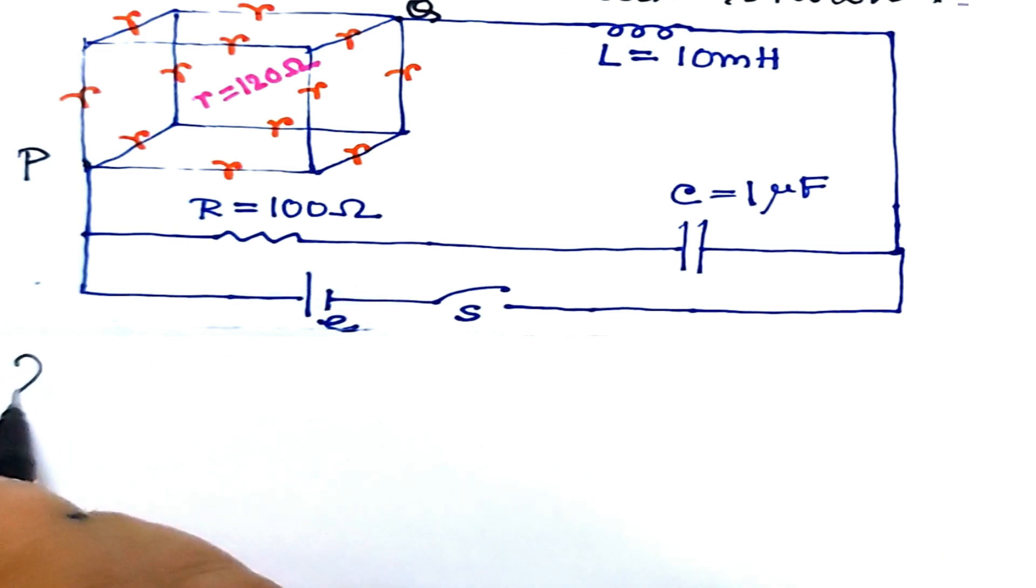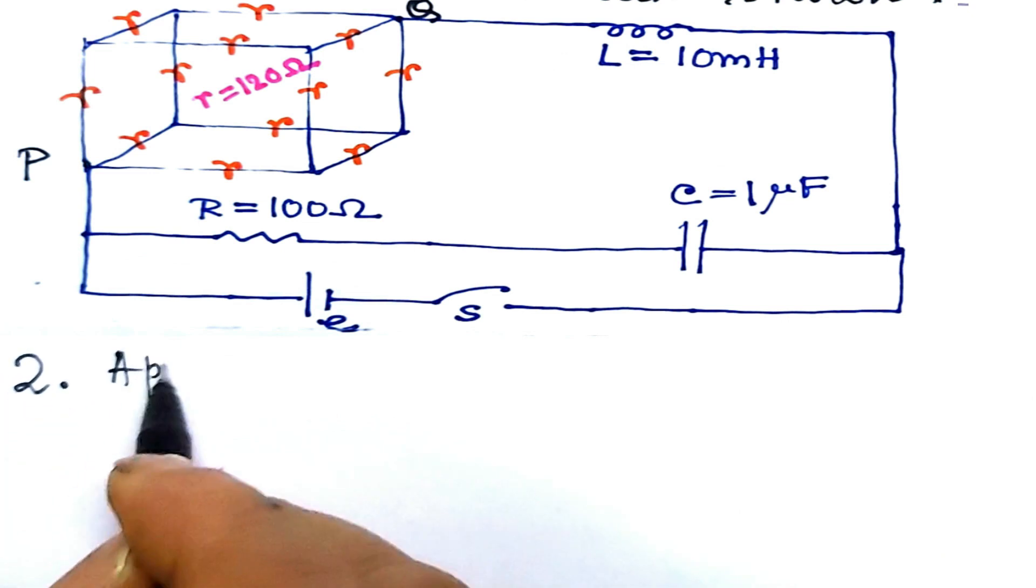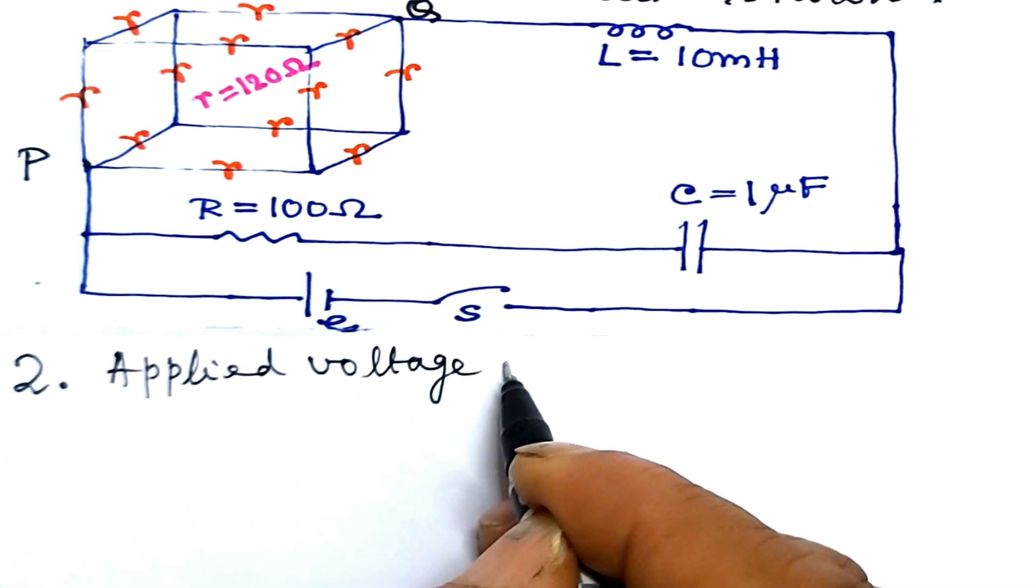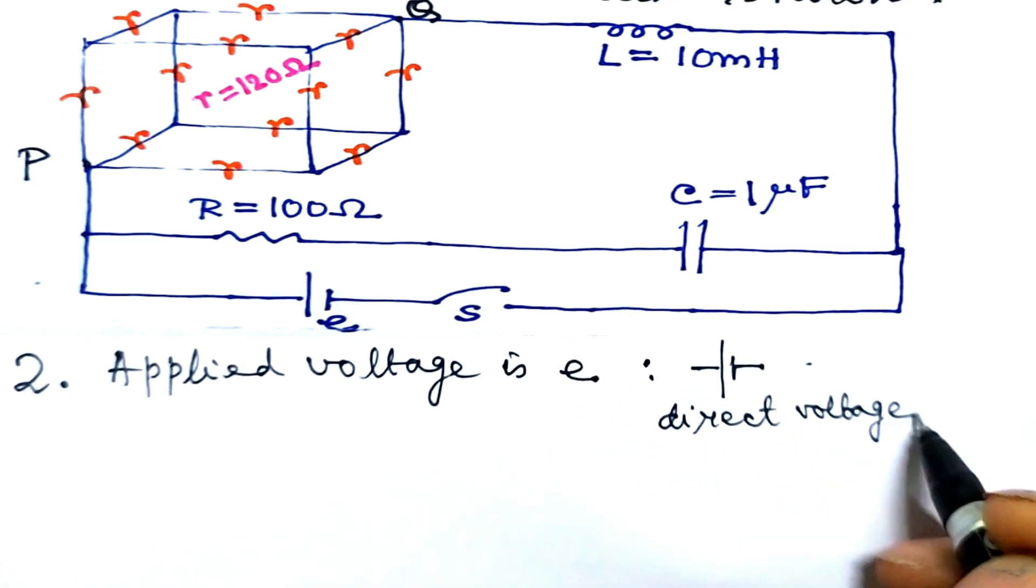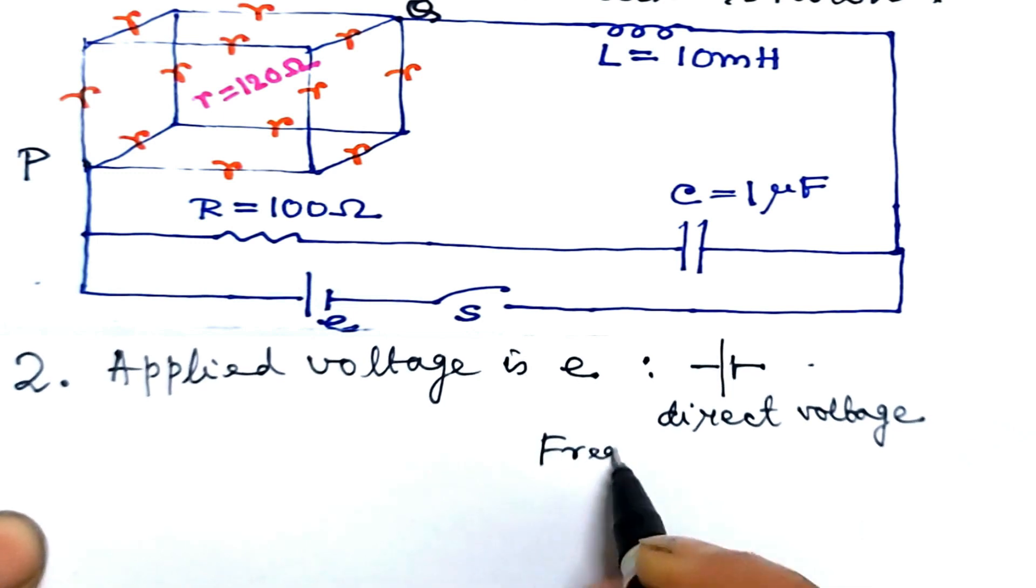Let us address the next question, number two. Applied voltage is e, which is a direct voltage, not alternating. Frequency of voltage variation is omega equal to 0.